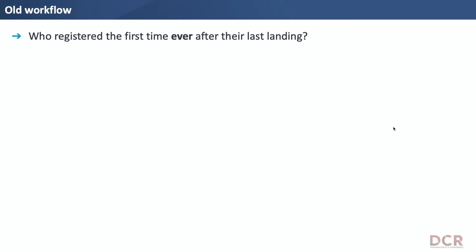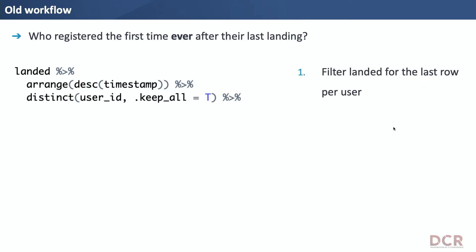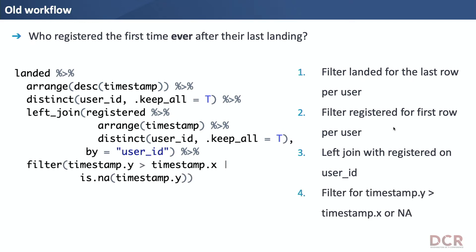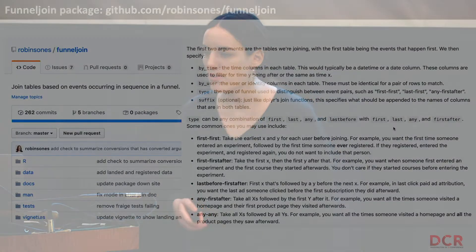That was a fair amount of code — probably something most of you could write. But let's say I switch up the question: what about who registered for the first time ever after their first landing? Now we have to change it: filter for their last landing, change to descending, join again with registered but only on the first-ever registration. This is where a lot of errors can come in — you're copying and pasting code but you have to remember to change it to descending, make sure you only get the first ever registration. There's a lot of room for error.